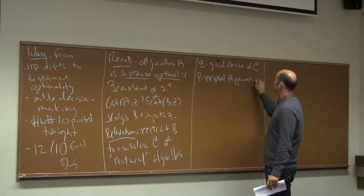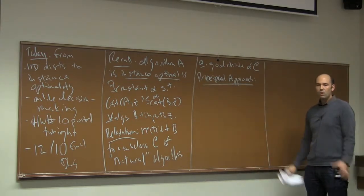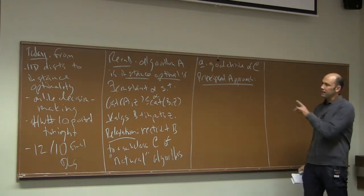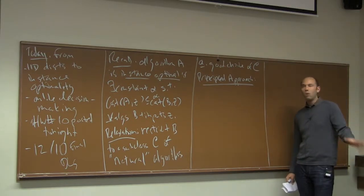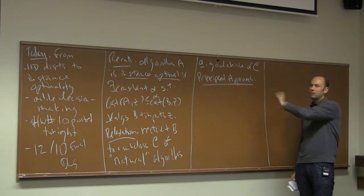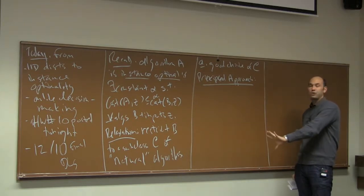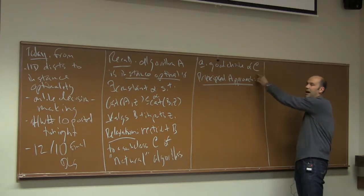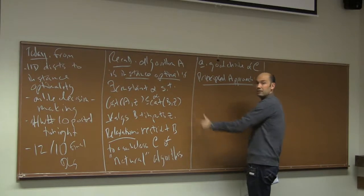Unlike the previous lectures where we literally assumed there was a distribution over inputs, here we're going to think about distributions over inputs only as a thought experiment — only to define the set C. Just to clarify: in this lecture, we will never actually do average-case analysis. We will never take expectations over an input. We're only going to look at distributions to define the set C, and then once we have that set of competitor algorithms, we look for an instance-optimality guarantee.